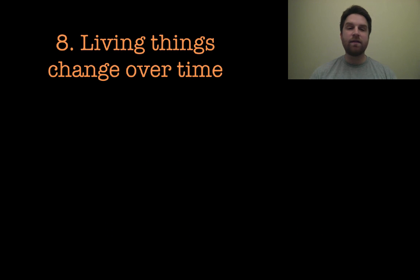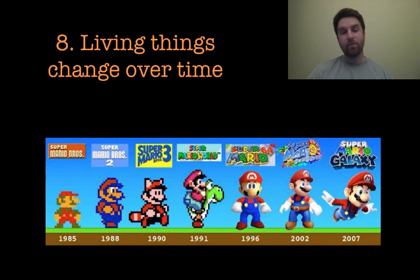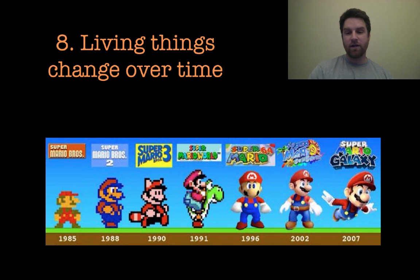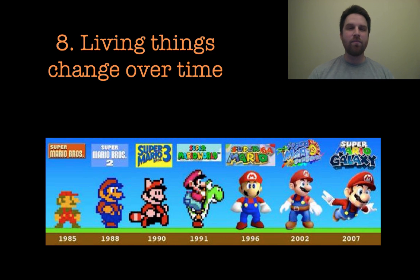The next characteristic is that living things change over time. Much like Mario here in 1985 — which is way before your time — look how the Mario character changes from 1985 until 2007. He does have a little bit more detail now that he's out of an 8-bit system. Living things do this as well.